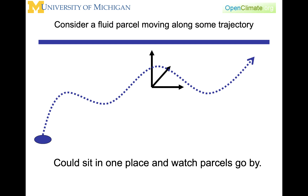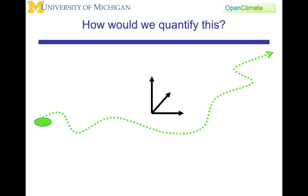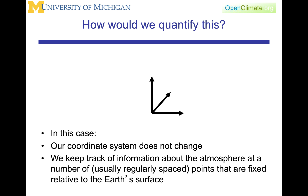Now consider a fluid parcel moving along the trajectory. Instead of putting a coordinate system that follows the parcel, what we're going to do is sit in one place and watch parcels go by. In this case, our coordinate system does not change. We keep track of information about the atmosphere at a number of usually regularly spaced points that are fixed relative to the Earth's surface.